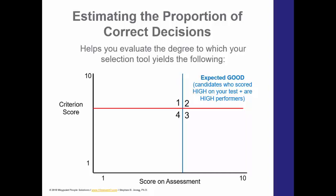In quadrant two, you can see that this is the expected good. These are employees who scored high on the test and are high performers. In quadrant four, these are expected bad — current employees who scored low on your test and are low performers.